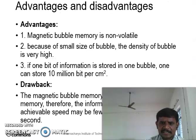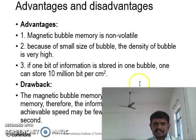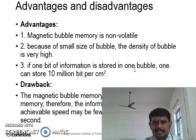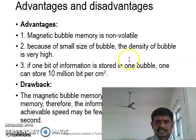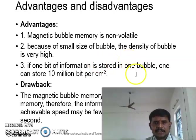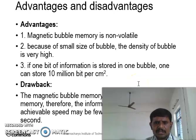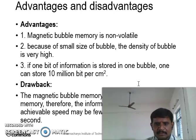The magnetic bubble memory has several advantages. It is non-volatile. Because of the small size, the density of bubble memory is very high. If information is stored in one bubble, up to 10 million bits per centimeter square can be stored.